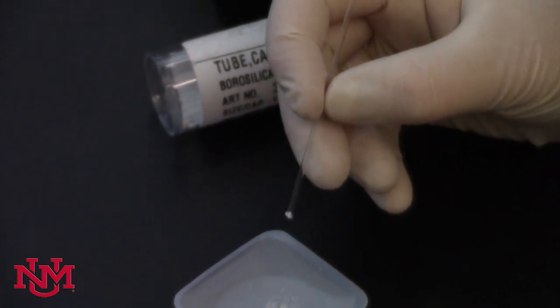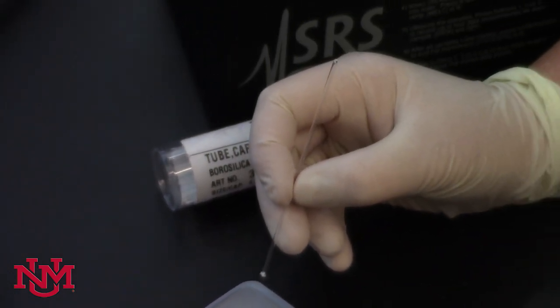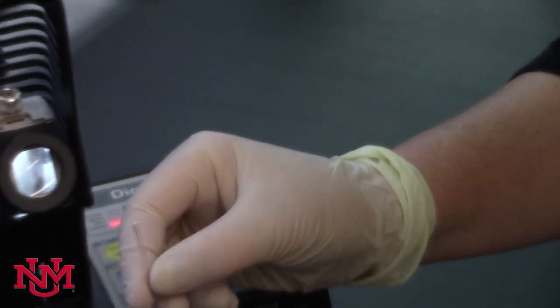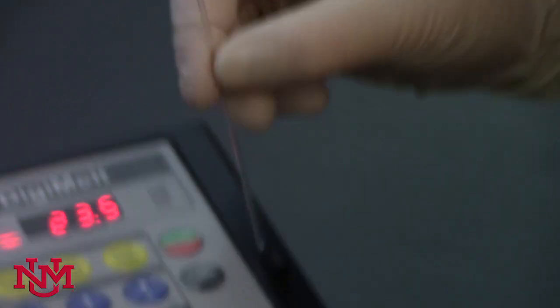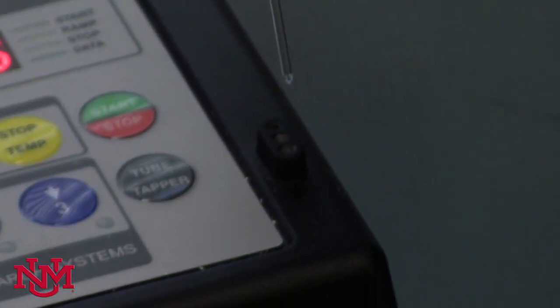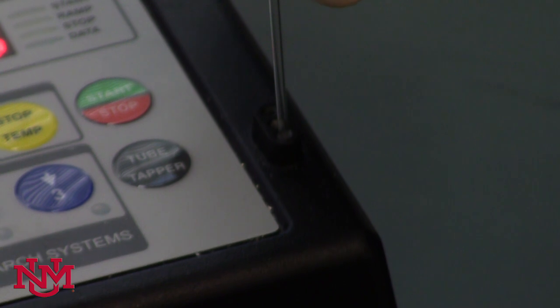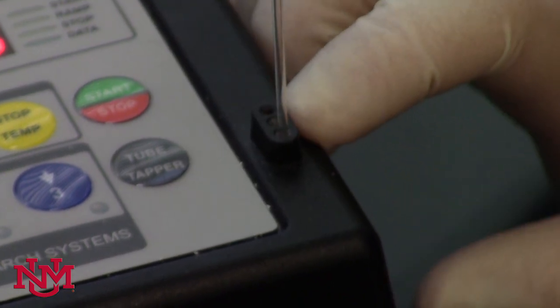Then you'll come over to the digi-melt, turn it upside down so that you have the sample's sealed end pointing down, and place it into one of these three slots here.